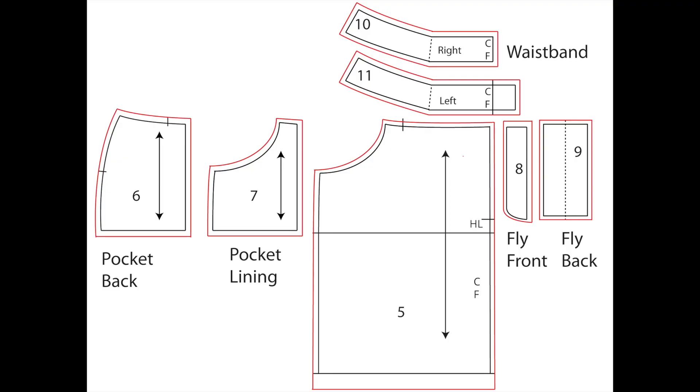The rest of the pattern pieces. The pocket back is to the top edge of the side of the skirt. The pocket lining has the same curve as the front skirt panel. Fly back has a dotted line down the centre which is going to be folded when you make it.